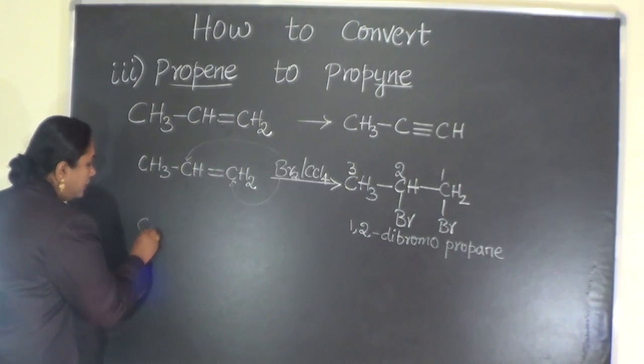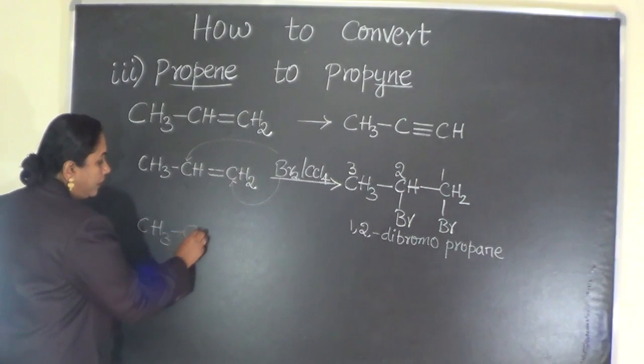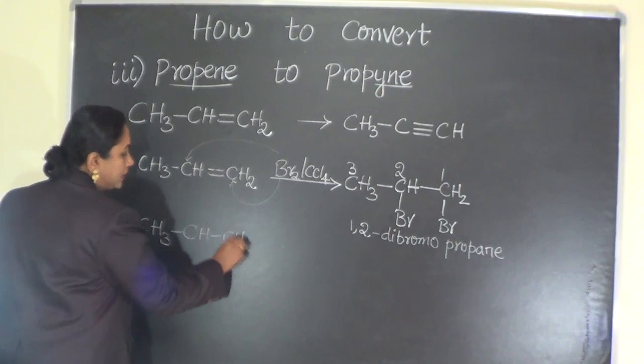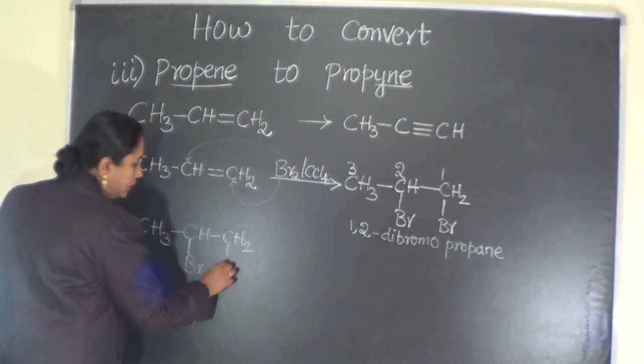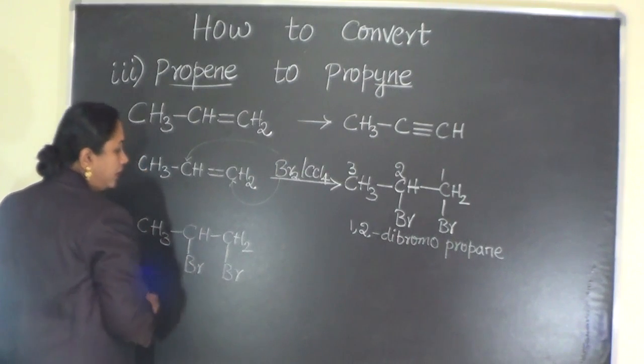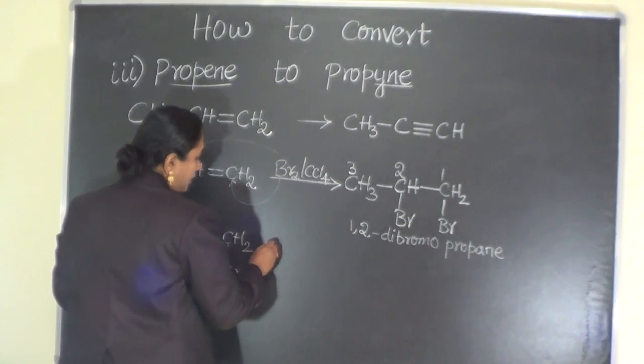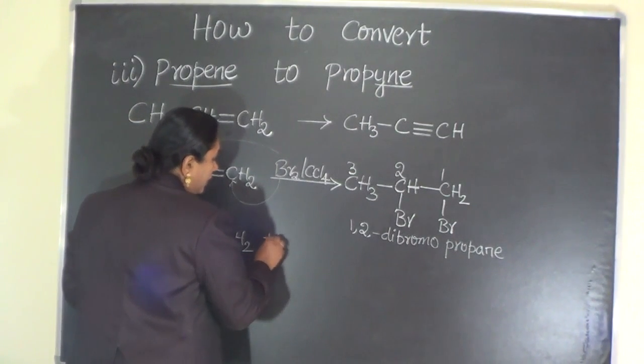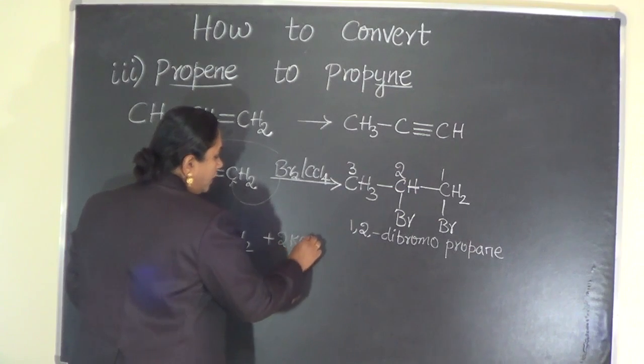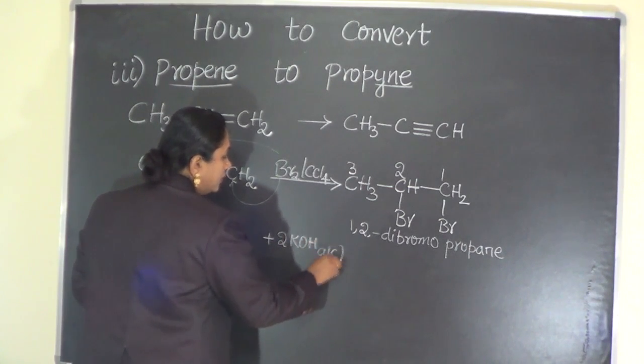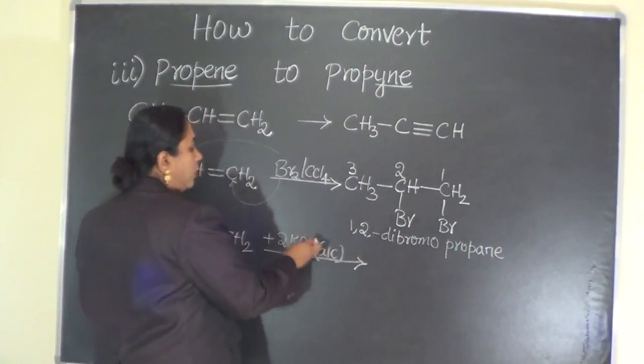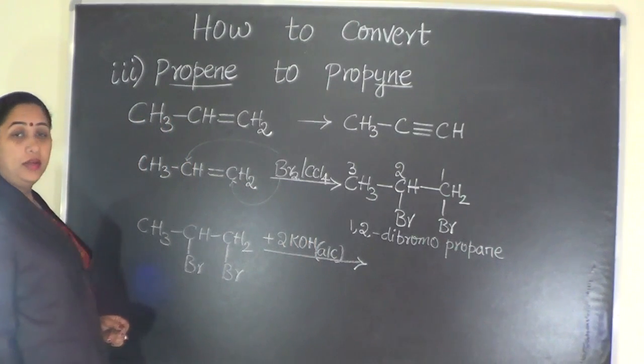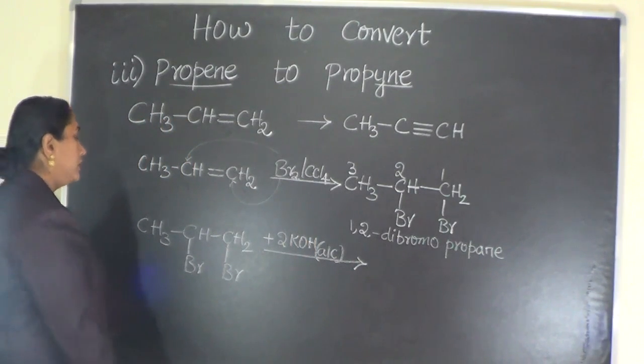We just need to subject that compound, 1,2-dibromopropane, to the process of dehydrohalogenation. And in the previous video lesson you learned which compound will act as a very good dehydrohalogenating agent. Yes, you are right. We are talking about alcoholic KOH. Alcoholic potash will act as a very good dehydrohalogenating agent.